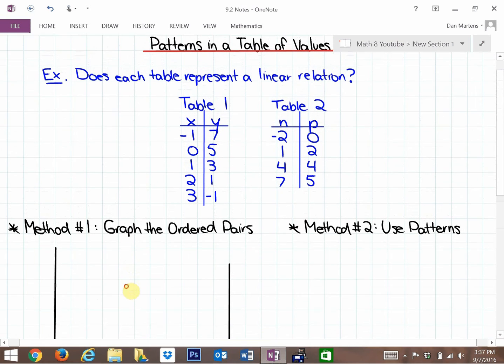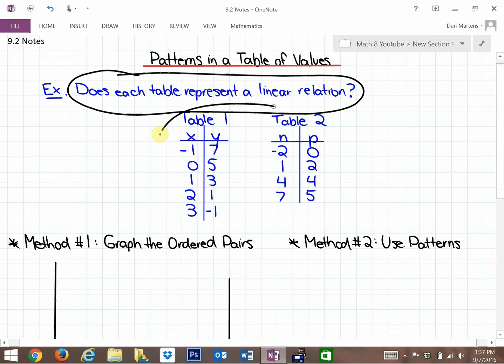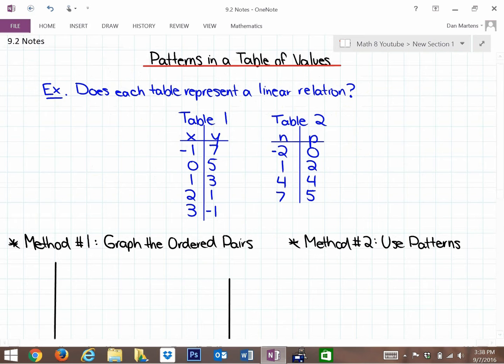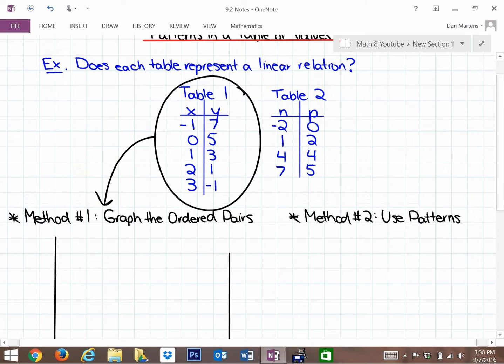The first thing that we're going to look at is a table of values and determine if each table represents a linear relation. There's going to be two methods. Let's investigate the first method first. Does each table represent a linear relation? We're going to investigate these two tables. You're going to also want either graph paper, or draw your lines very straight with numbers spaced out evenly. So the first thing we're going to investigate is table one by graphing the ordered pairs.